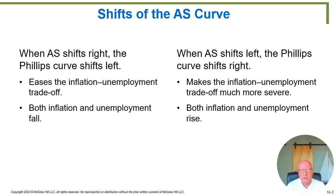If we can shift the aggregate supply curve to the right, we don't have to have increases in inflation in order to have reductions in unemployment — you can have both reductions in unemployment and reductions in inflation at the same time. Whereas if we shift the aggregate supply curve to the left, the Phillips curve shifts to the right, making the inflation-unemployment tradeoff even more severe, meaning both inflation and unemployment rise simultaneously.